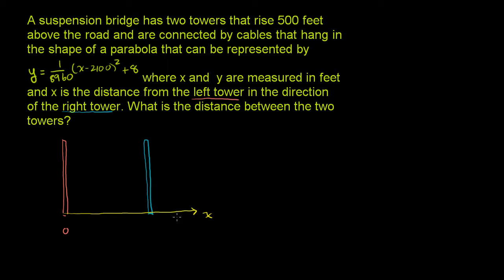We just need to know that x is measuring this distance — the distance from the left tower in the direction of the right tower, just like our coordinate plane. If you say x equals a million feet, you're going to get something way beyond that second tower. If you say x is one foot, you're going to get something in the direction of the second tower from the left tower. And then y is the height in general that we're dealing with — this is the y-axis. So we're just dealing in the first quadrant of the coordinate plane.